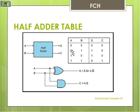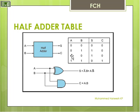Next, input A is 0, B is 1. Result is 0 and 1, that is 1. Sum is equal to 1. There is no remainder, so Carry is equal to 0. Now 1, 0: 1 and 0 is equal to 1. There is no remainder, so Carry is equal to 0.